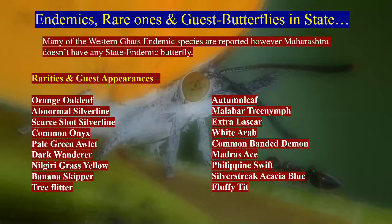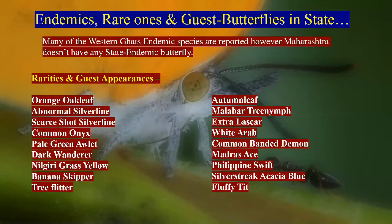Further rarities include white arab, pale green owlet, common banded demon, dark wanderer, Madras ace, Nilgiri grass yellow — also very recently seen in Maharashtra — Philippine swift, banana skipper, silky acacia blue, tree flitter, and fluffy tit in very few parts. These are some of the rarities and guest appearances in the big state of Maharashtra.